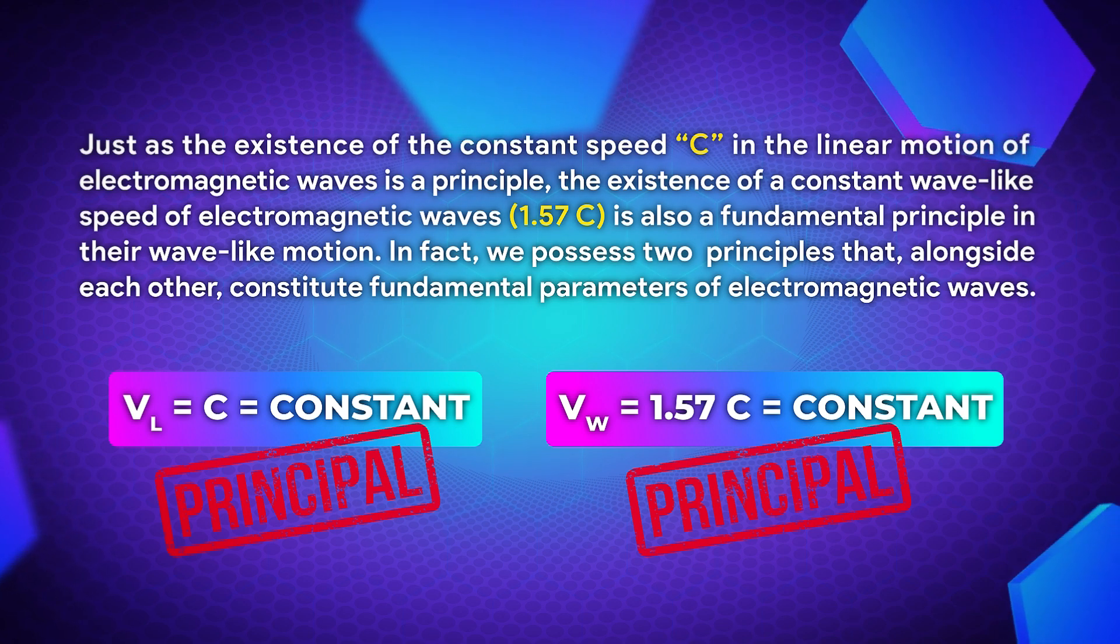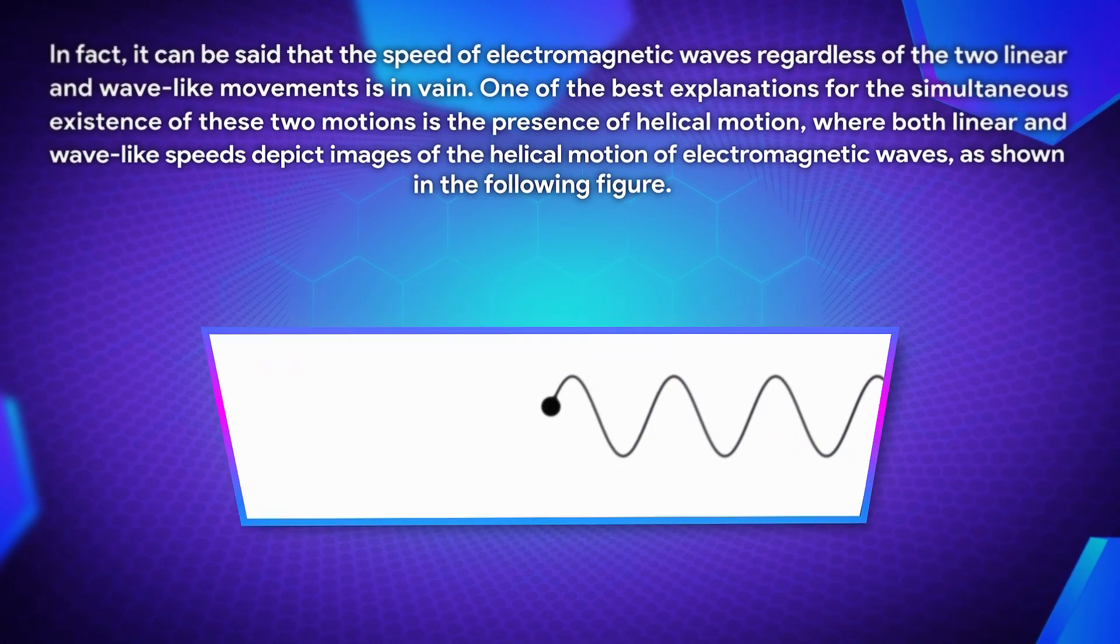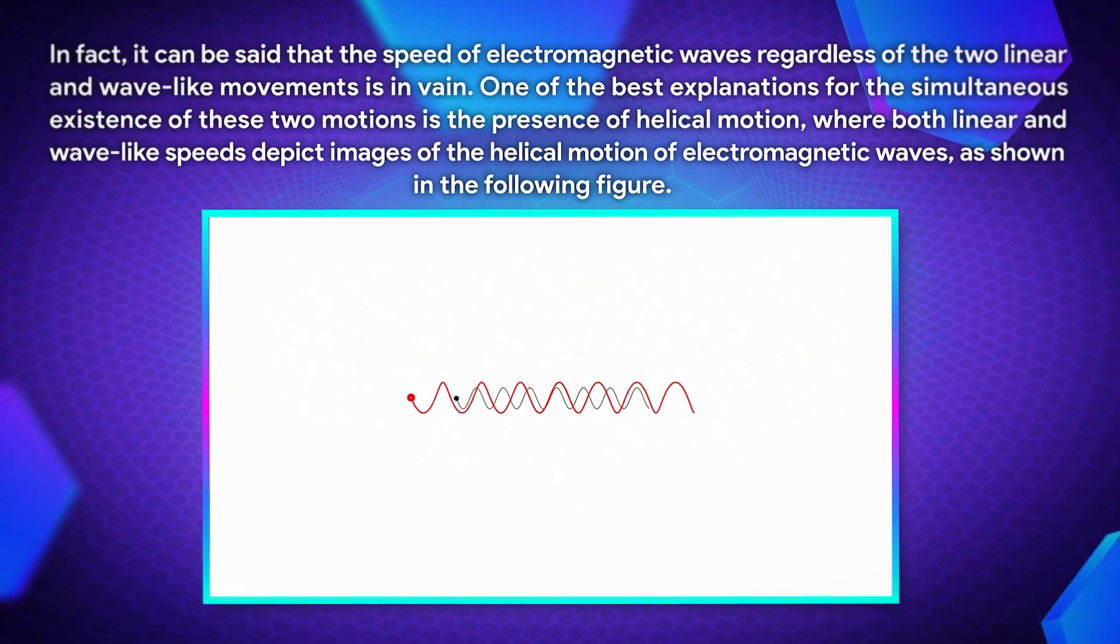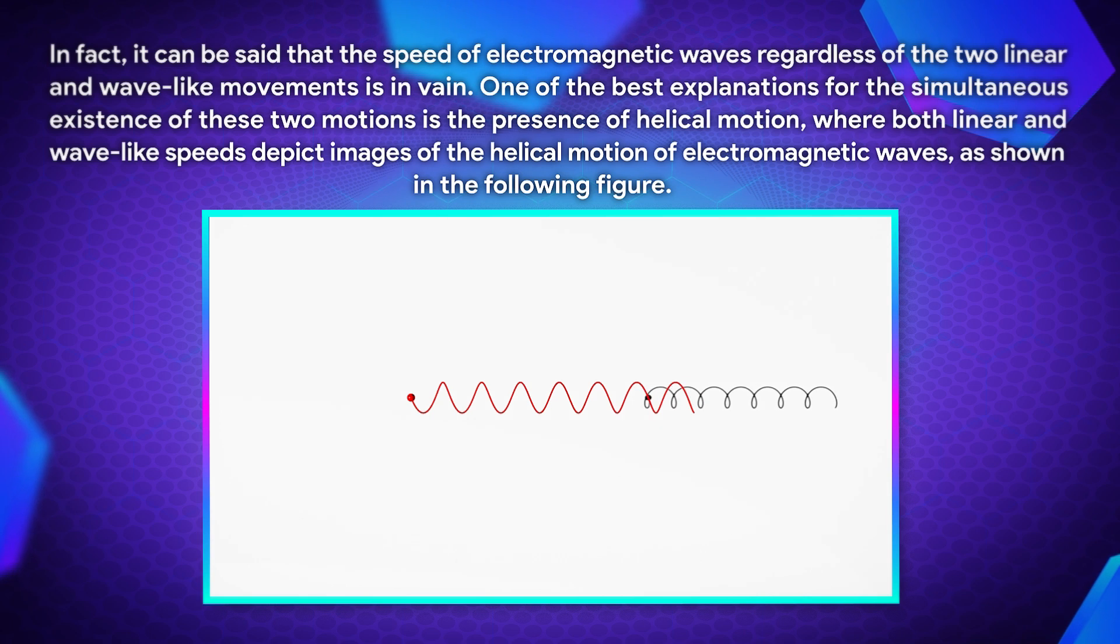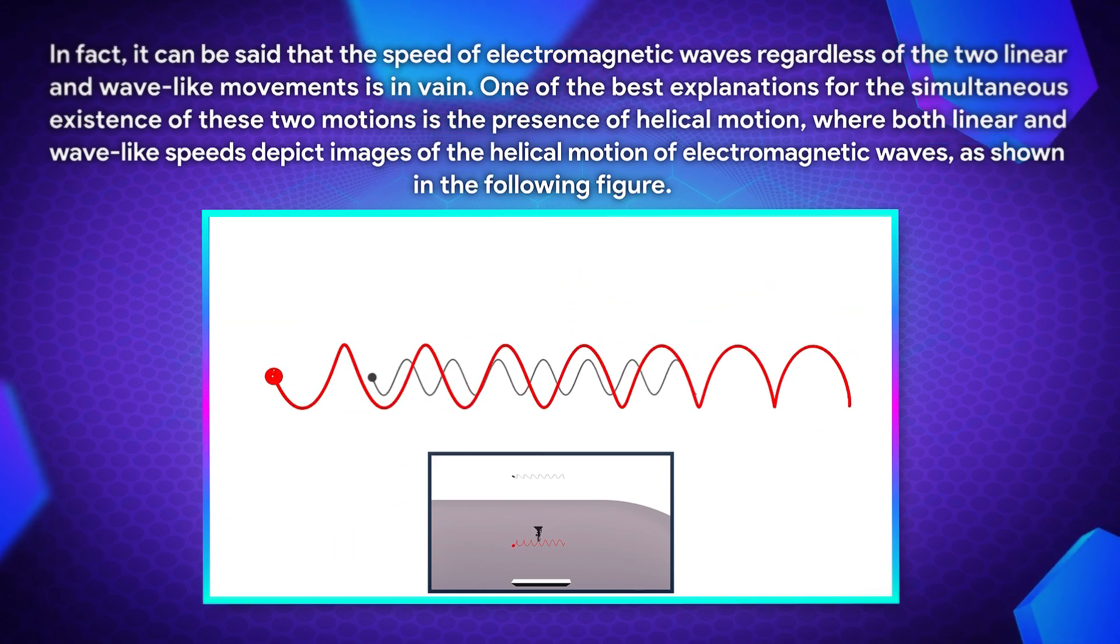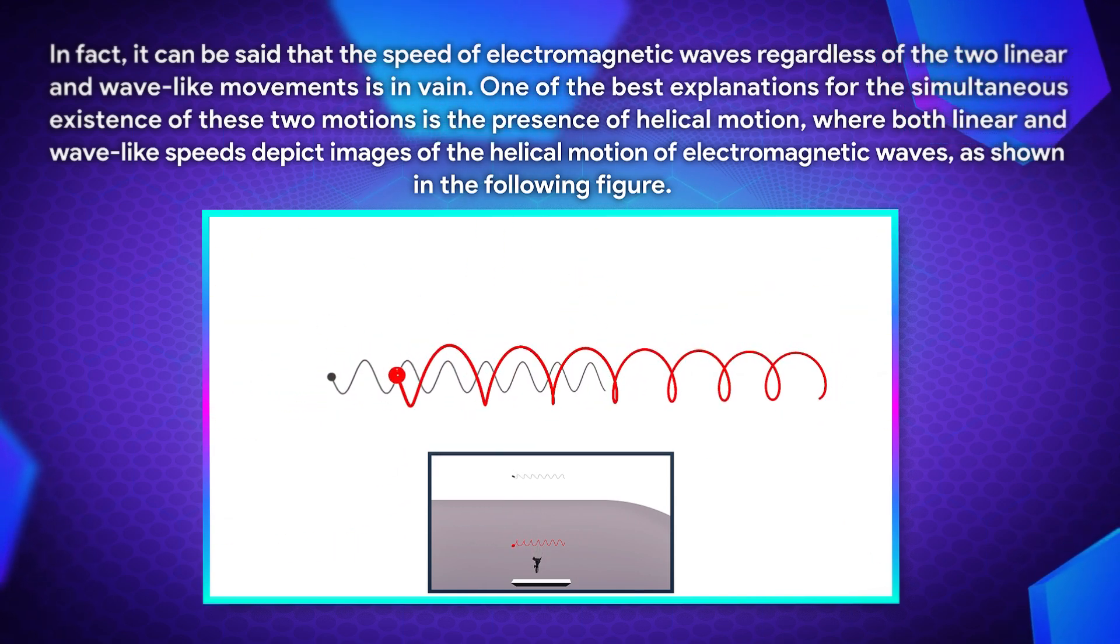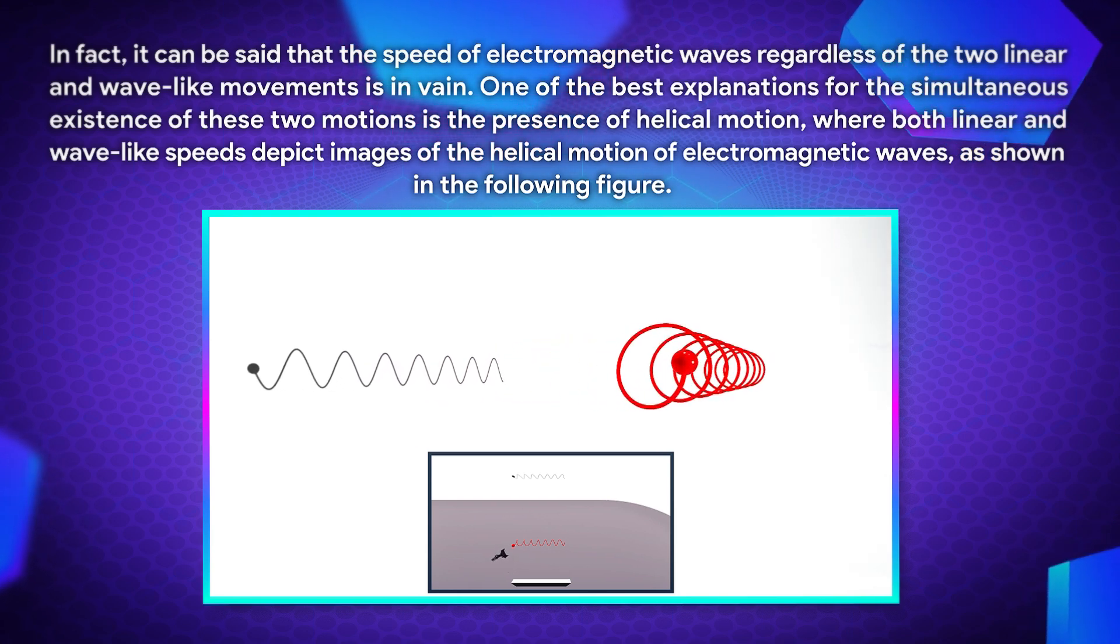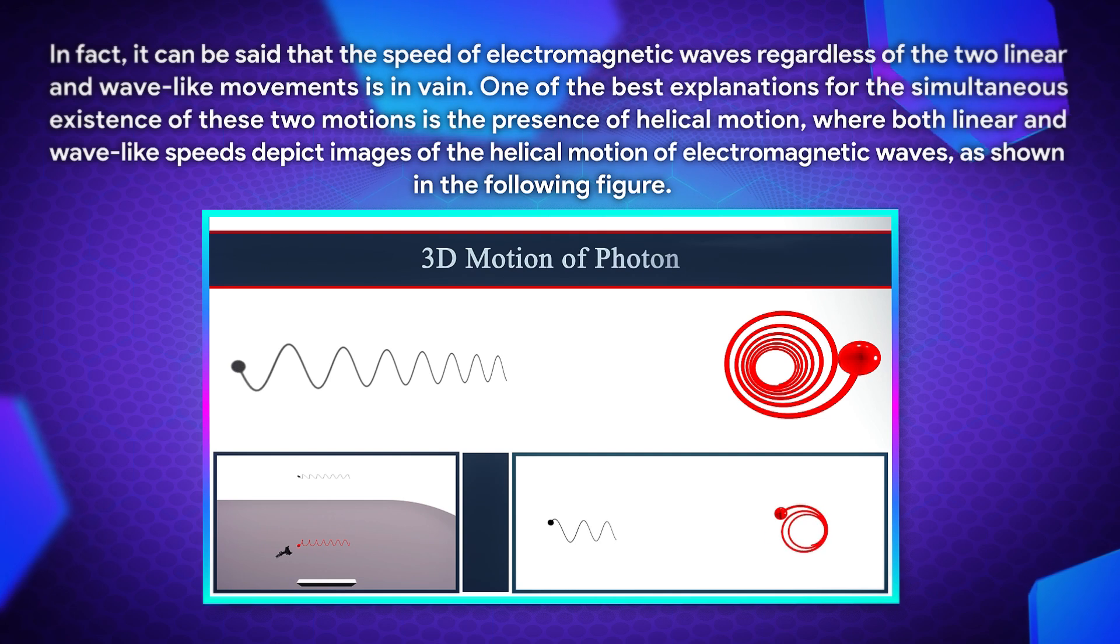In fact, it can be said that the speed of electromagnetic waves, regardless of the two linear and wave-like movements, is invariant. One of the best explanations for the simultaneous existence of these two motions is the presence of helical motion, where both linear and wave-like speeds depict images of the helical motion of electromagnetic waves, as shown in the following figure.